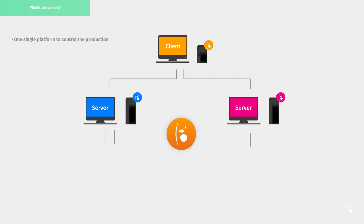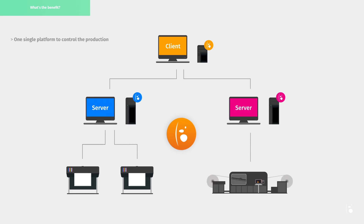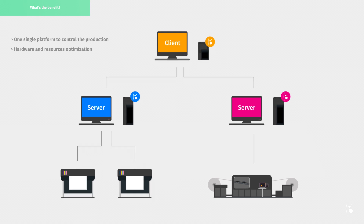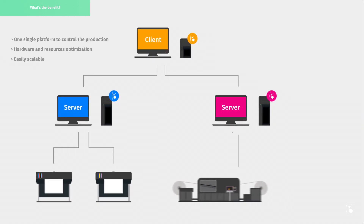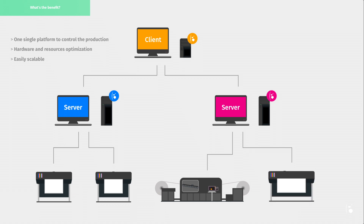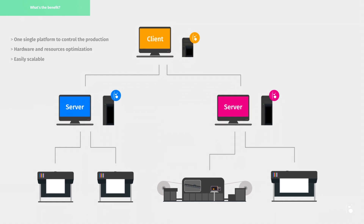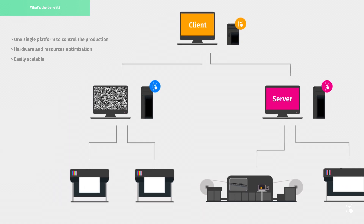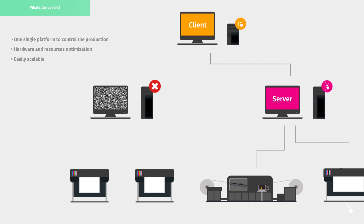One single platform to control the whole production. Hardware and resource optimisation: use your most powerful computer to RIP files for the biggest machines, and keep your smaller computer to submit the jobs through the network. Also, it's easily scalable. In case of a new equipment purchase, just install the driver on the right computer and drive the printer locally and or remotely. In case of hardware failure, just change a few IP settings to drive the equipment from another RIP station.